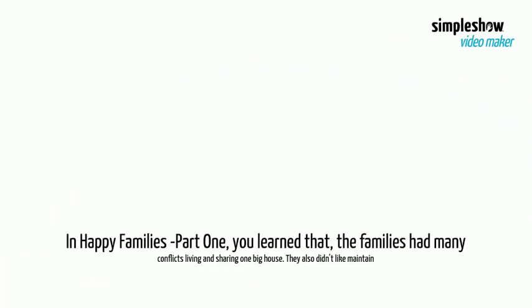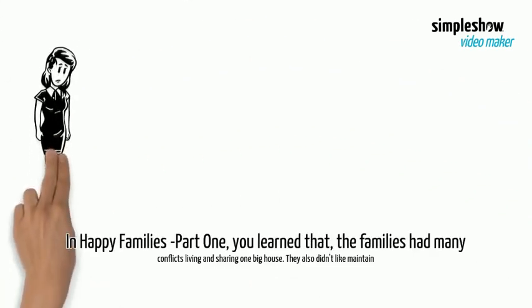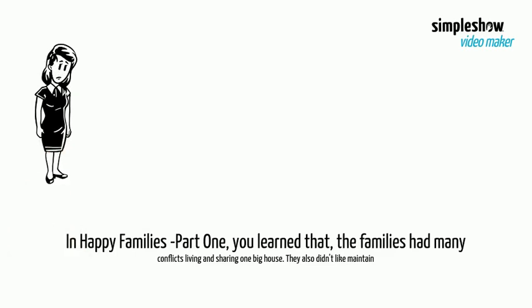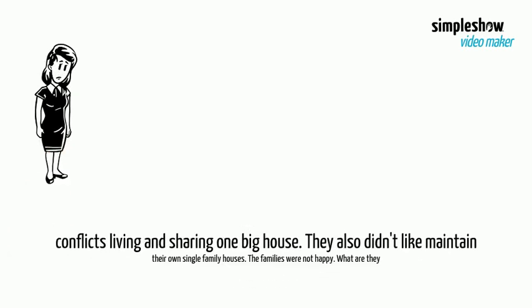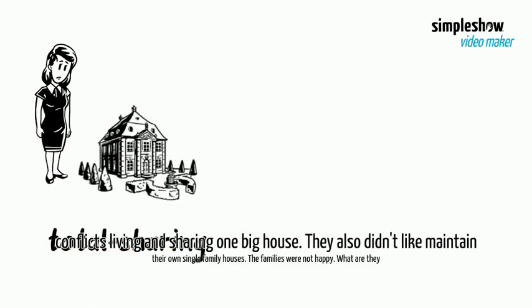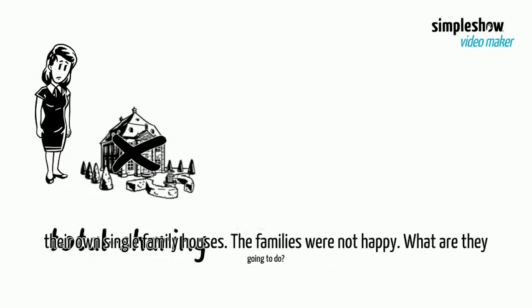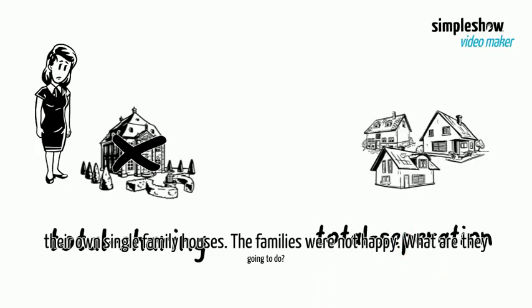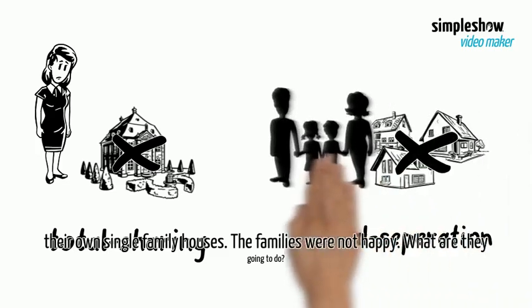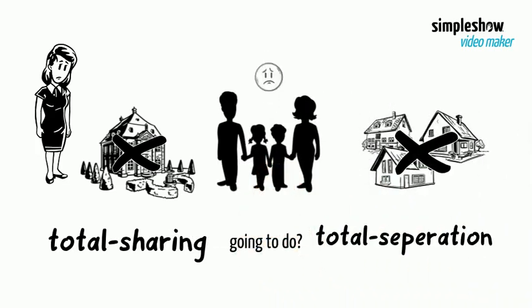In Happy Families Part 1, you learned that the families had many conflicts living and sharing one big house. They also didn't like maintaining their own single-family houses. The families were not happy. What are they going to do?